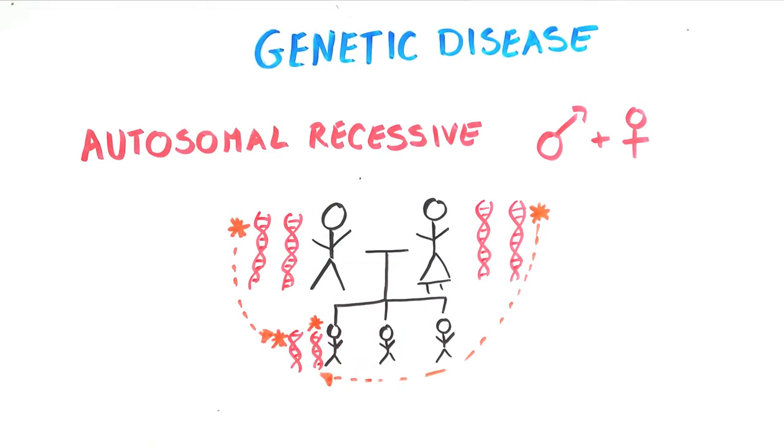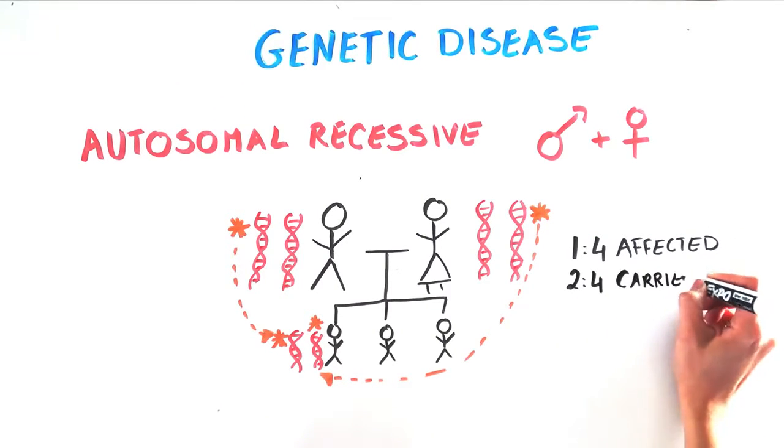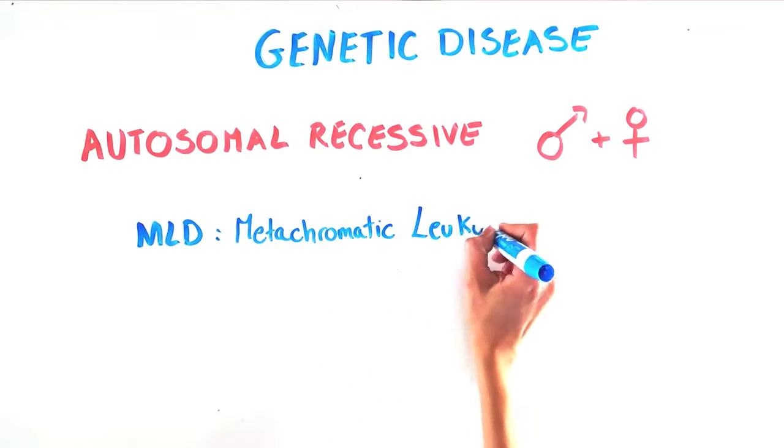Since each carrier parent has one good and one bad copy of the gene, each child has a 1 in 4 chance of being affected, with a 2 in 4 chance of each child being a carrier. One devastating autosomal recessive disease is MLD, which stands for metachromatic leukodystrophy.